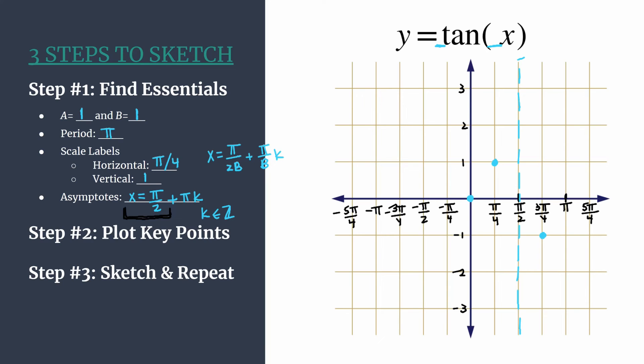And we can move on to step three, sketch and repeat. So to sketch this first pattern, let's go ahead and plot our first point in the next repetition, the next cycle, so that we can easily sketch in our tangent graph here.